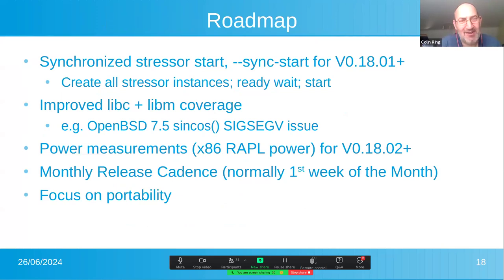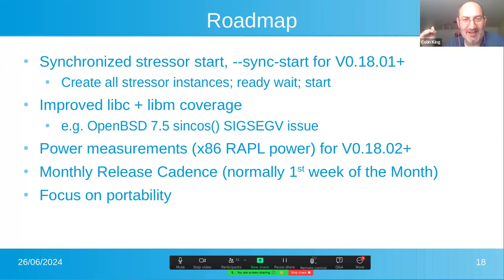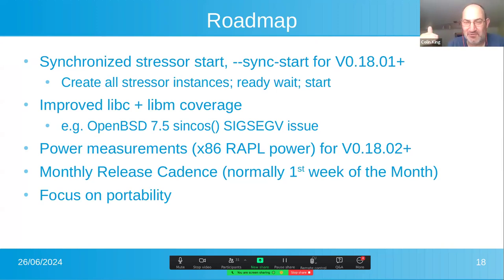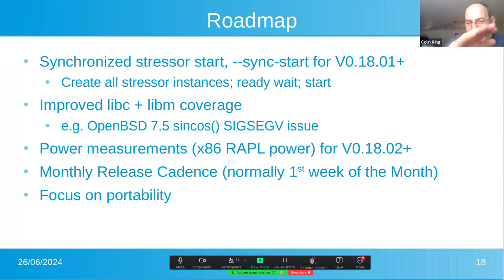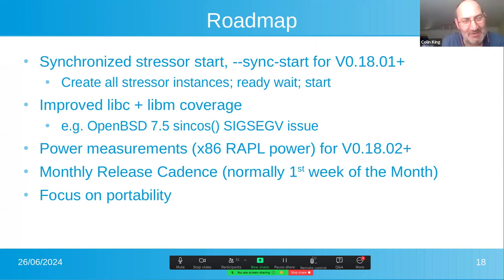Where are we going from now on? I'm currently adding a new sync start option. This will allow all the stressors to start up — they get forked, they get ready to run — and when they're all ready, they will start in synchronization. This is useful if you want to run 500 stressors on a 500-core machine: normally it takes a while for all stressors to start, creating a slow cascade, but sync start allows you to get ready and then hit the machine all at once. I'm also working on expanding the LibC and LibM coverage — for example, on OpenBSD I found a sincos SIGSEGV bug with the coverage there.